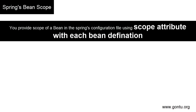Using the scope attribute's value as prototype, you can force Spring to produce a new bean instance each time one is needed. Or just the opposite — using the scope attribute's value as singleton, you can force Spring to return the same bean instance each time one is needed.